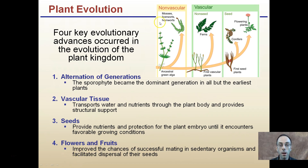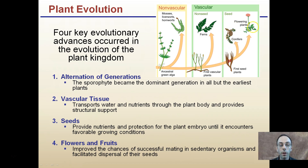We see non-vascular plants — green algae and mosses — very early in development. Non-seeded vascular plants, such as ferns, are one of the first to develop vascular tissue. Going over to conifers, which are like pine trees, and then ultimately to flowering plants, which develop those fruits and flowers.